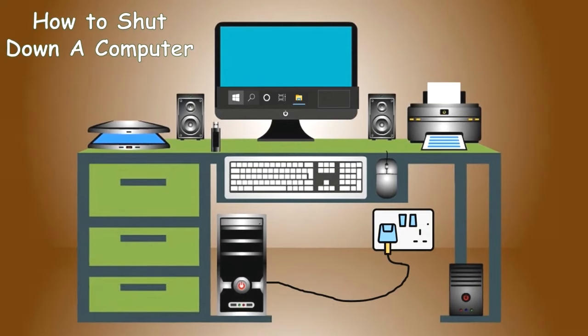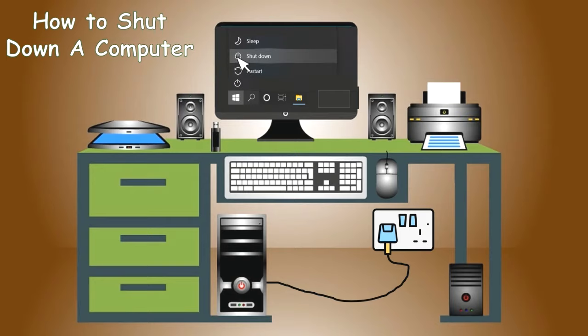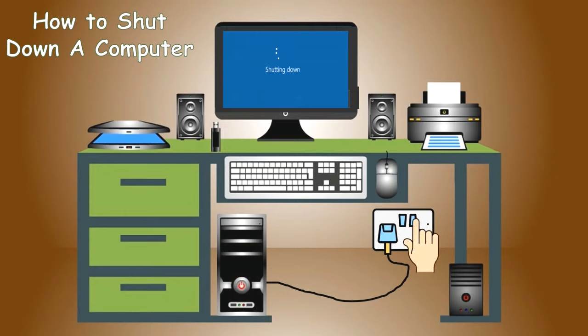Steps to shut down the computer are: Click the start button. Click the power option button. Click the shutdown option to turn off the computer. Now switch off the main power supply button.